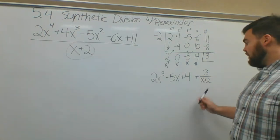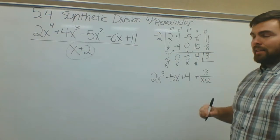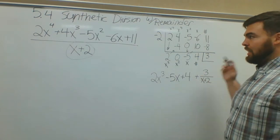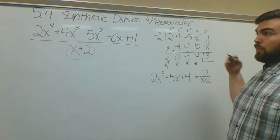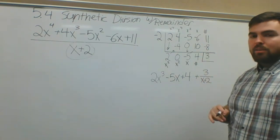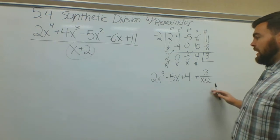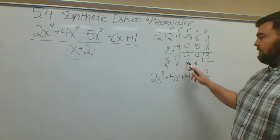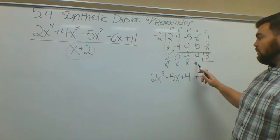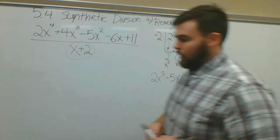So it'll be plus 3 over x plus 2. That's your remainder, that's what's left over. This is your full answer. If you were going to try this a different way, this could take many more steps. Synthetic division, especially with bigger problems, is always the fastest way to go. So this would be your answer: 2x to the third, negative 5x, positive 4, plus 3 over x plus 2. Let's try another one of those.